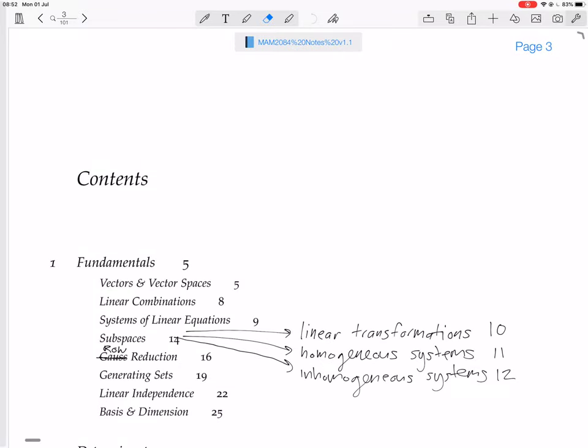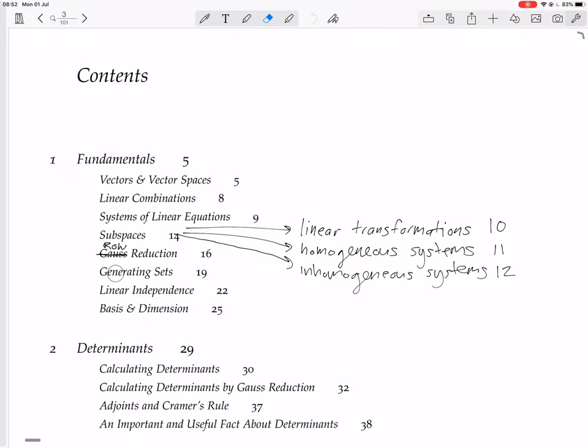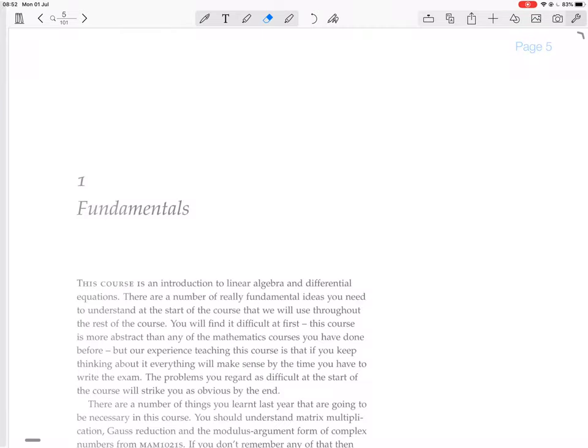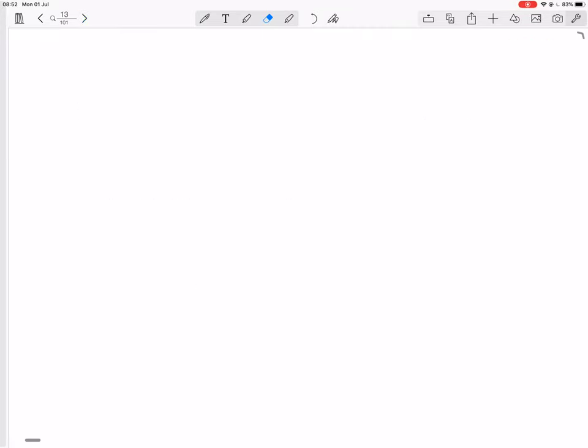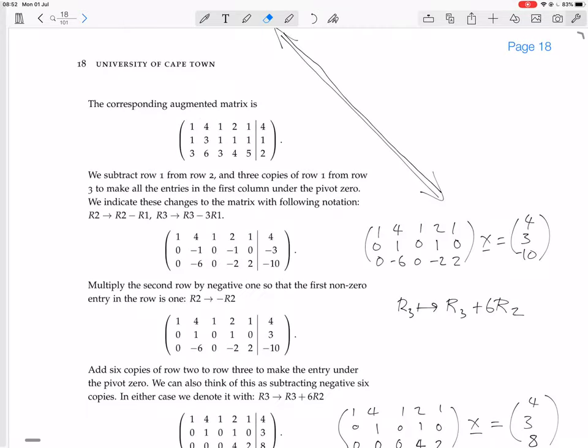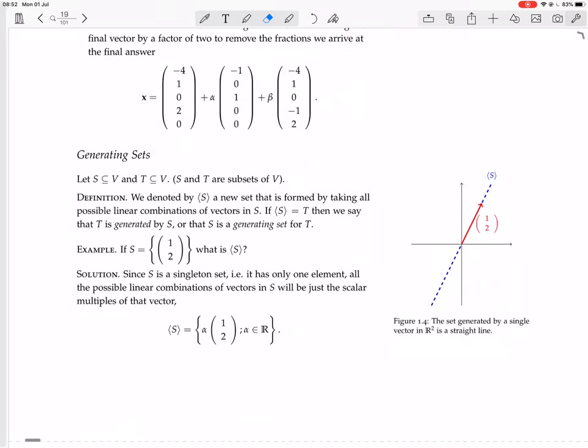So, we're looking now at generating sets. Let S be a subset of V and T be a subset of V. We denote by S with these angle brackets around it a new set that is formed by taking all possible linear combinations of vectors in S.